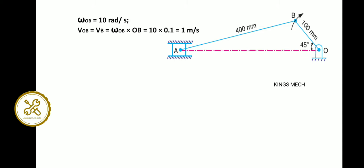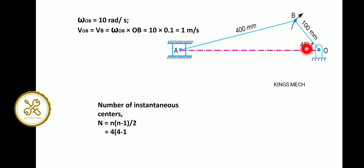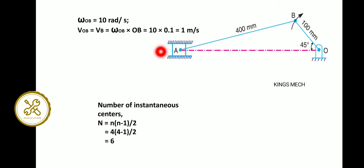Regarding the number of instantaneous centers: the value is 1, 2, 3. The value of 3 is 4. Because this end is a fixed end, 1 link is 2, 2 link is 3, so that is the mandatory one. If this is 3, we can solve the method. If this is fixed, it is the sliding angle, so the number minus 1 is 4. That is 4 instantaneous centers. 4 into 4 minus 1 divided by 2 equals 6.